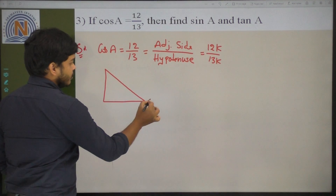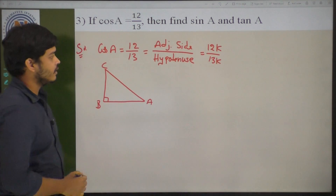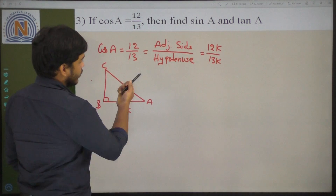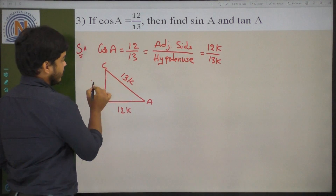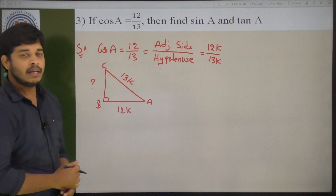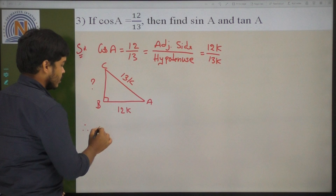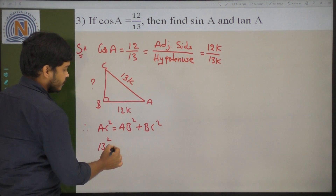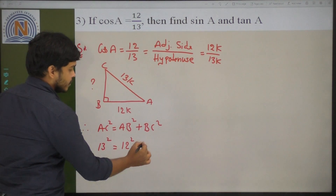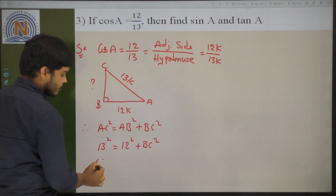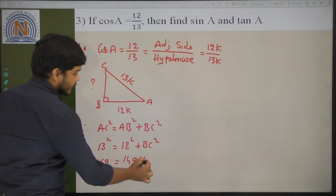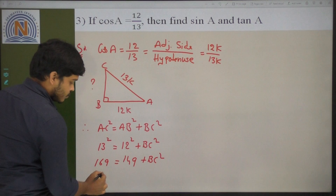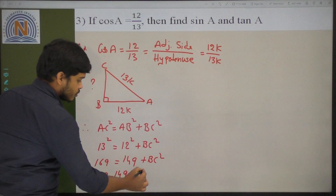We need to calculate BC, the opposite side. By using Pythagoras rule: AC squared equals AB squared plus BC squared. So 13 squared equals 12 squared plus BC squared. 13 squared is 169, and 12 squared is 144. Sending 144 to the left hand side: 169 minus 144 equals BC squared.